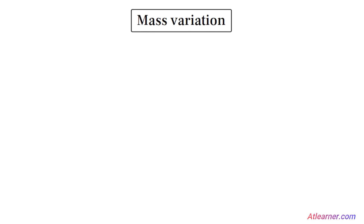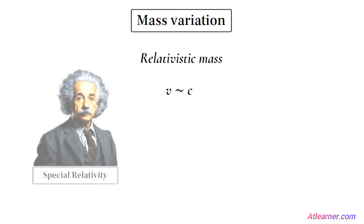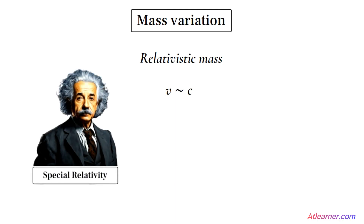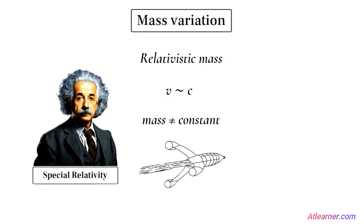In special relativity, the concept of mass variation — also known as relativistic mass — refers to the increase in an object's mass as its velocity approaches the speed of light. According to Einstein's theory of special relativity, the mass of an object is not constant but instead varies with its velocity. Specifically, as an object's velocity increases, its mass increases.